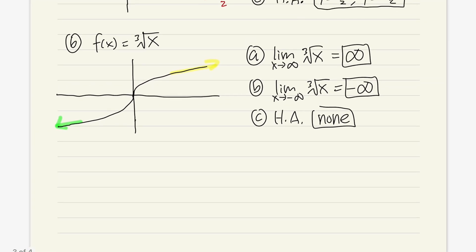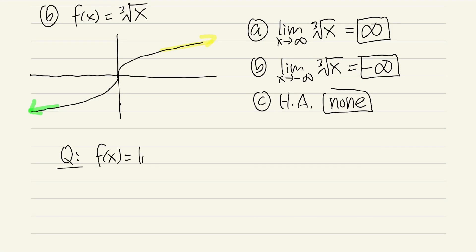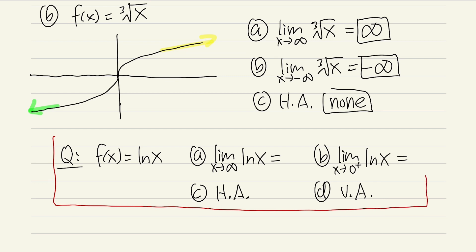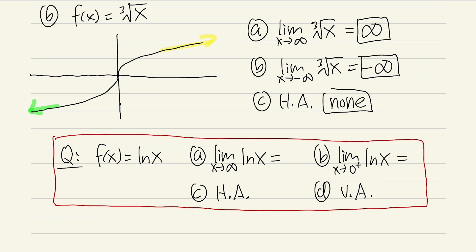I'm going to give you guys a question to try. Consider the function natural log of x. Part a: what is the limit as x approaching infinity of natural log of x? Part b: what's the limit as x approaching 0 plus of natural log of x? Part c: do we have any horizontal asymptote? Part d: do we have any vertical asymptote? Go ahead and leave your answers in the comments below.